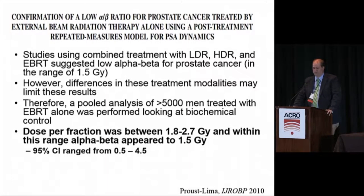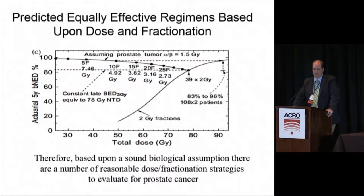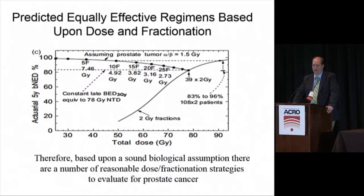A number of studies have looked at the alpha-beta of prostate cancer. Many used LDR or HDR data, which had been thought to perhaps contaminate it. One study used just external beam radiation patients, pooled from multiple institutions including the RTOG, with over 5,000 men, looking at long-term biochemical control. Fraction sizes were between 1.8 and 2.7 gray, and they concluded the alpha-beta of prostate cancer was probably around 1.5, though the confidence interval was broad, going from less than 1 to almost 5.